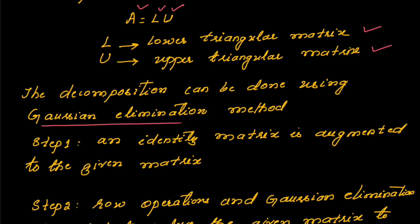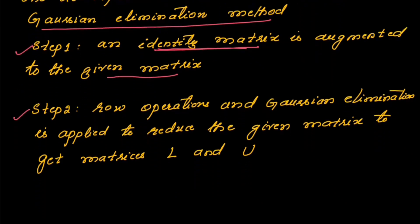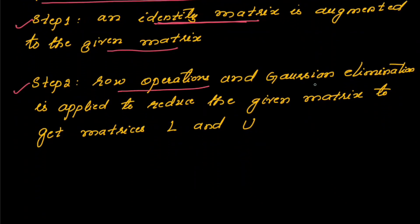The decomposition can be done using the Gaussian elimination method, which you have seen in the previous session. There are two steps involved in this matrix decomposition. First, you need to include an identity matrix for the given matrix. Step 2: row operations and Gaussian elimination are applied to reduce the given matrix to obtain matrices L and U.